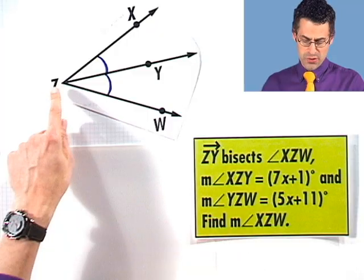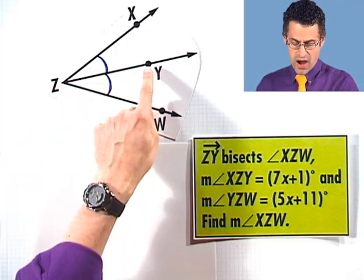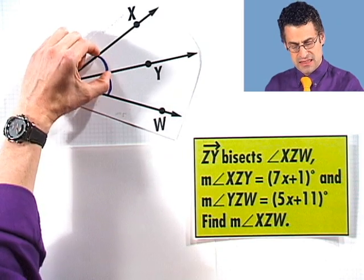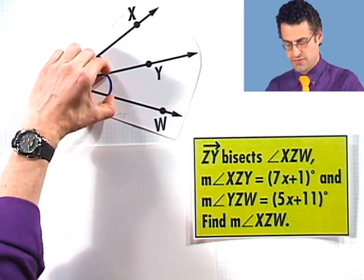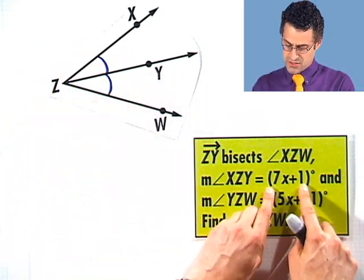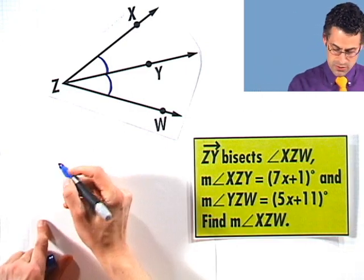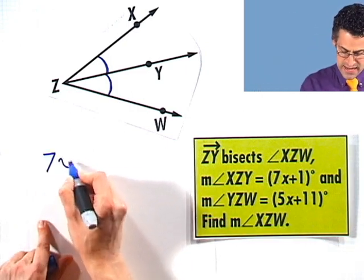Well, I need a relationship that's going to bring the X's together in one equation. What do I know? I know that the ray ZY is an angle bisector. That means that the measure of this angle equals the measure of that angle, or in particular, this quantity equals that quantity. And so we're led to an algebraic equation.